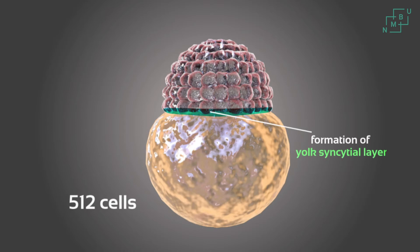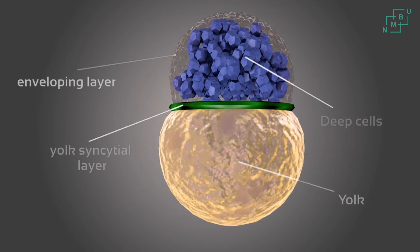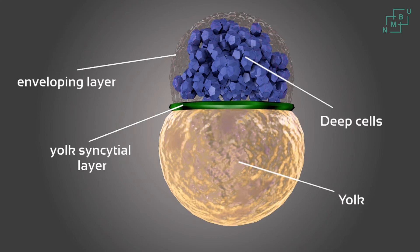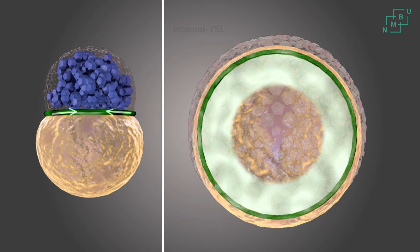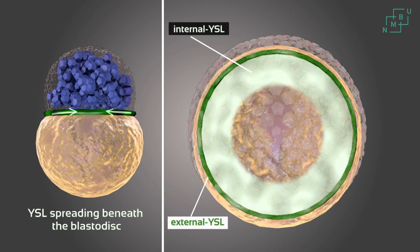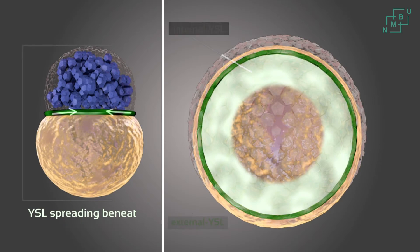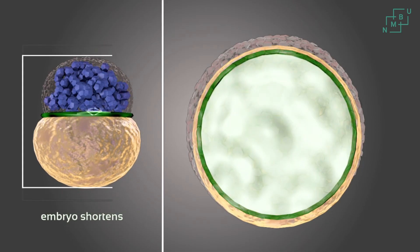The yolk syncytial layer is visible as a single ring around the blastodisc margin. At the oblong stage, the enveloping layer is a layer of thin outer cells. There are many deep cells that are motile and dividing asynchronously. The yolk syncytial layer is spreading beneath the blastodisc and moving away from it, which has the effect of shortening the whole embryo as the blastodisc is compressed down on the yolk cell. The yolk syncytial layer now consists of an external yolk syncytial layer, external to the blastodisc, and an internal yolk syncytial layer that is beneath the blastodisc.